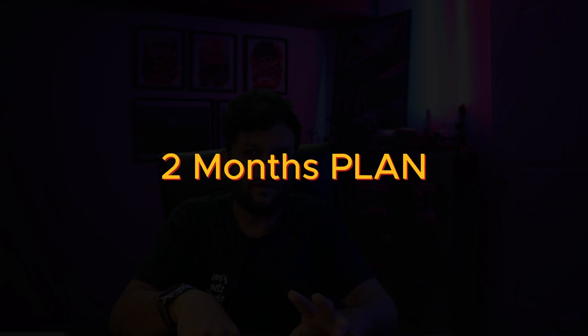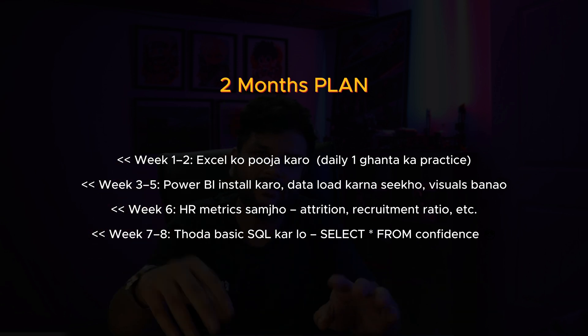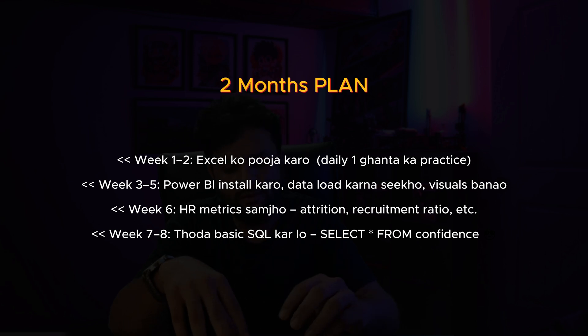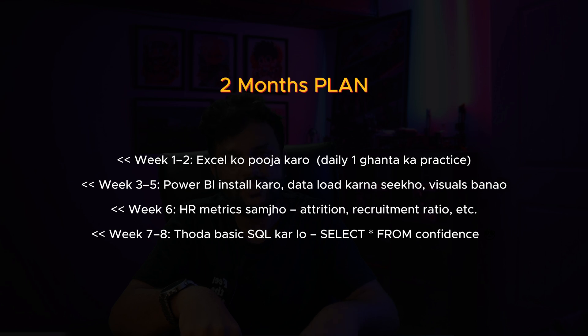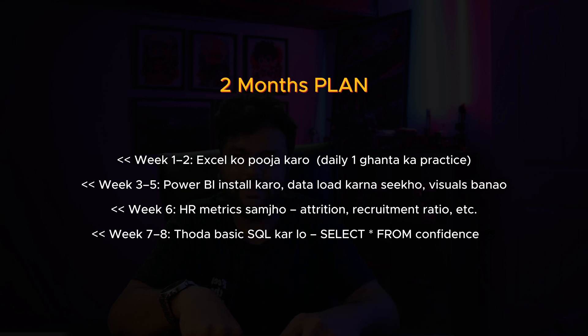Now let's talk about the roadmap — how to become an HR analyst in 12 months. Weeks one and two: master Excel, practice daily for one hour. Weeks three to five: install Power BI, learn to load data, create visuals, watch YouTube tutorials, and build three HR-related dashboards. Week six: learn HR metrics — what is attrition, headcount, recruitment ratio, payroll, etc. One week is enough if you give two to three hours a day.